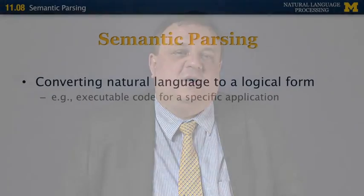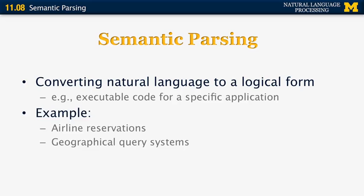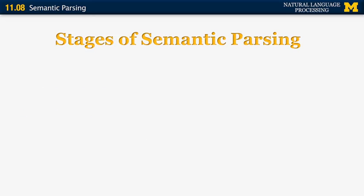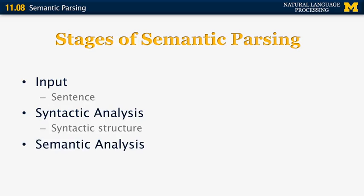The next segment is about semantic parsing. Semantic parsing is about converting natural language to a logical form — for example, to build executable code for specific applications such as an airline reservation or a geographical query system. Semantic parsing has three stages: take the input sentence, convert it into a syntactic parse tree using syntactic analysis, and then perform semantic analysis to arrive at a semantic representation.